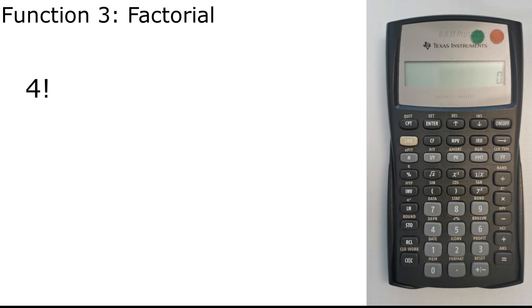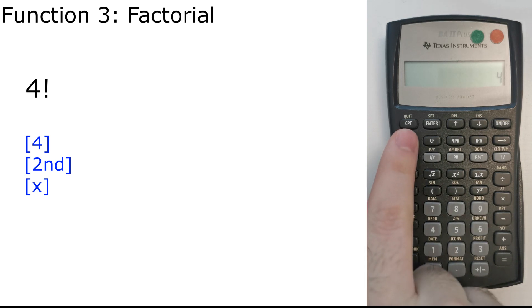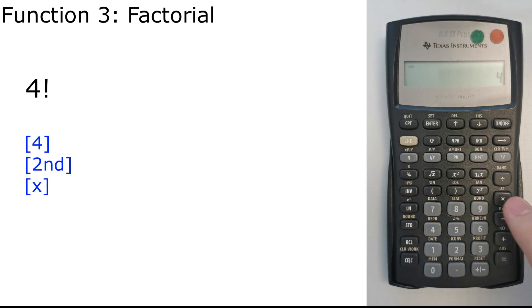Now let's calculate a couple of small formulas. If we have the factorial, as you can see here, it's 4 factorial. So what we do, we press 4, then we press 2nd, then multiplication, which is X factorial. We get 24.